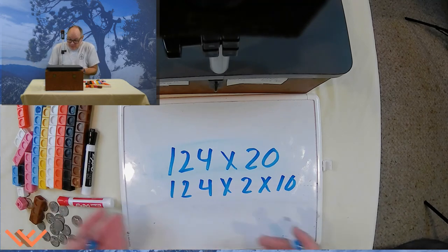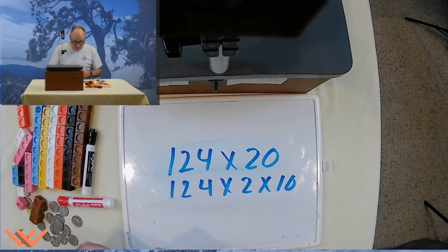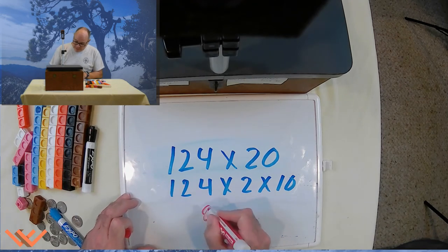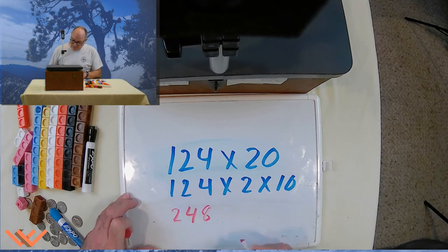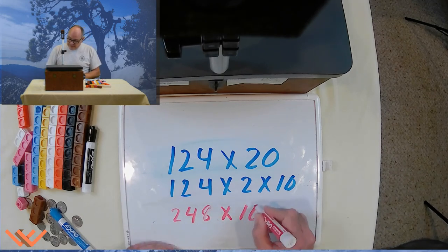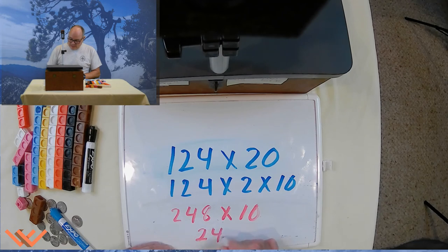Well, here we go. That's going to be an 8. That's going to be a 4. 248 times 10, and that equals 2480, because I'm adding that 0 to the end.